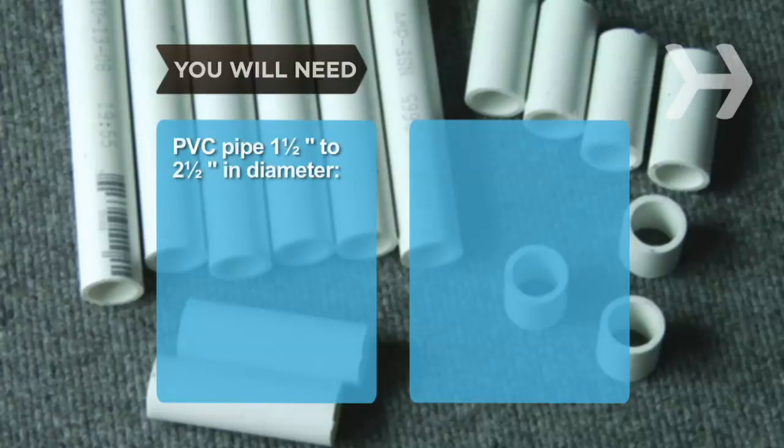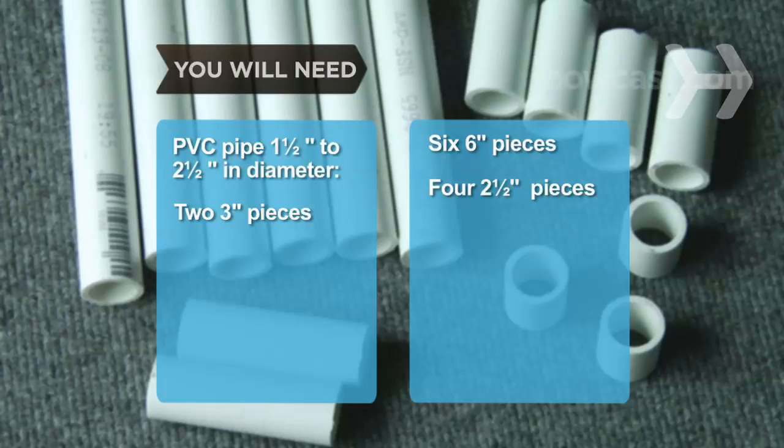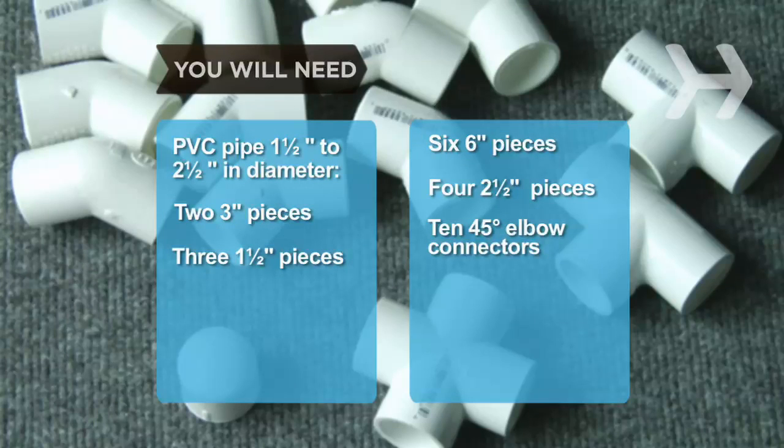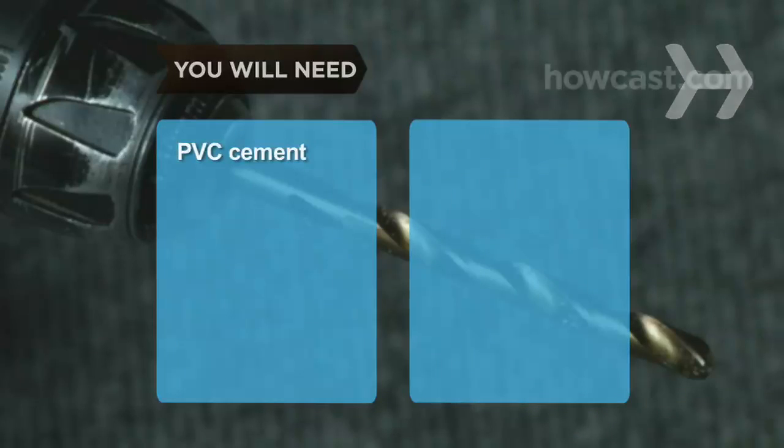You will need PVC pipe 1.5 to 2.5 inches in diameter: 6 6-inch pieces, 2 3-inch pieces, 4 2.5-inch pieces, and 3 1.5-inch pieces, 10 45-degree elbow connectors, 2 PVC T connectors, a 4-way cross connector, a PVC end cap, a can of PVC cement,